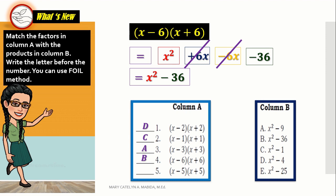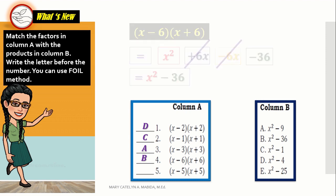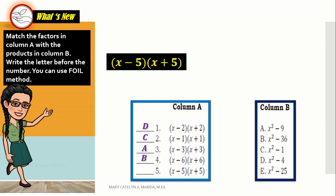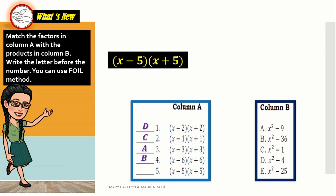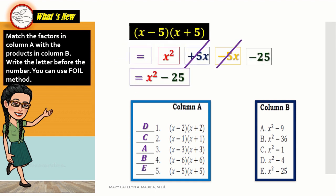Now let's go to the last number: the difference and the sum of x and 5. Good job! The answer is letter E, x squared minus 25. If you got all 5 items correctly, you did a good job. If you want to review further, please pause and replay this video as much as you need.